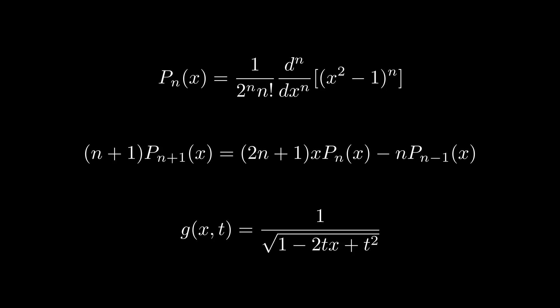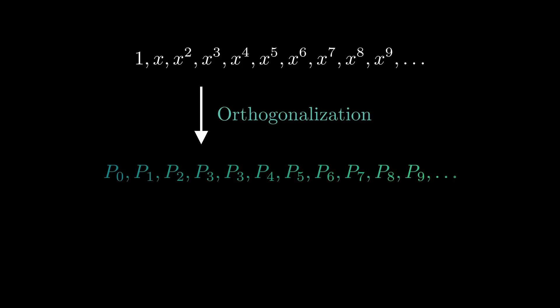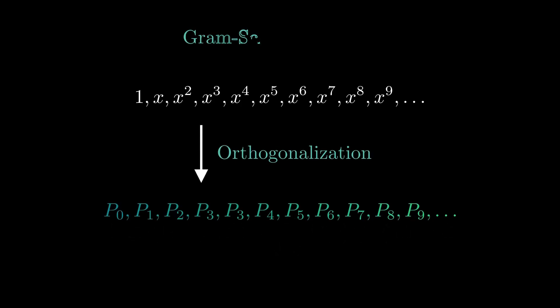Let's start with the following problem. We start with a sequence of powers of x. Now we want to turn this into a sequence of orthogonal polynomials over the interval from minus 1 to 1. We say that two polynomials are orthogonal over this interval if the integral of the product is equal to zero. This integral is called the inner product of the two polynomials. The process to turn the powers of x into an orthogonal sequence is known as the Gram-Schmidt process, which works more generally for every inner product space.